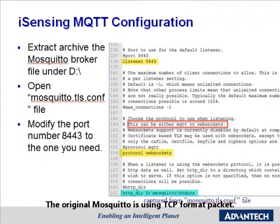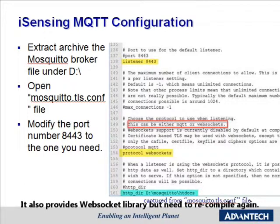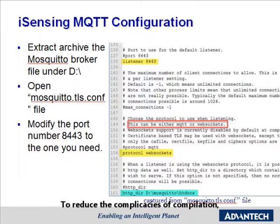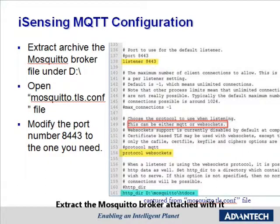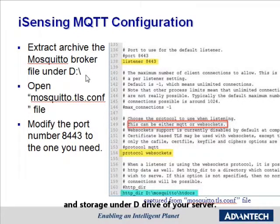The original Mosquitto uses TCP format packets. It also provides a WebSocket library but requires recompilation. To reduce the complexity of compilation, a user can extract the Mosquitto version with WebSocket from the downloaded FAQ file from the AIDAN forum, then extract the Mosquitto broker and store it on the D drive of your server.